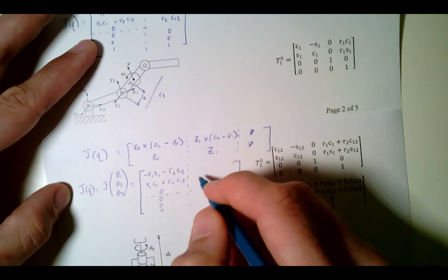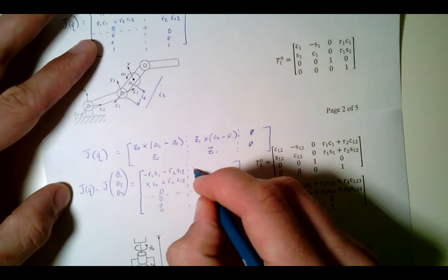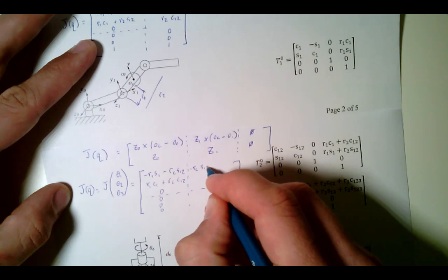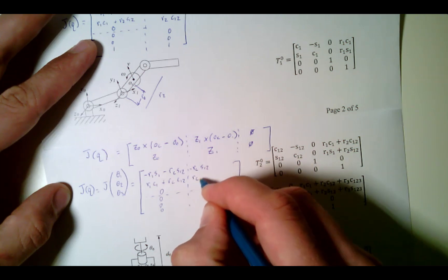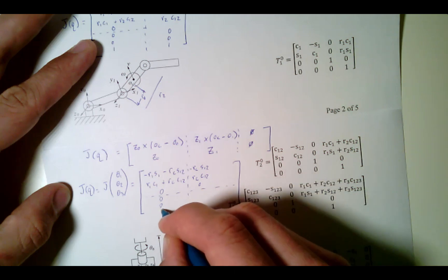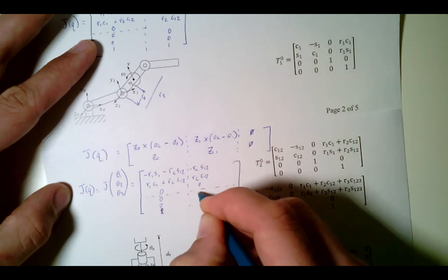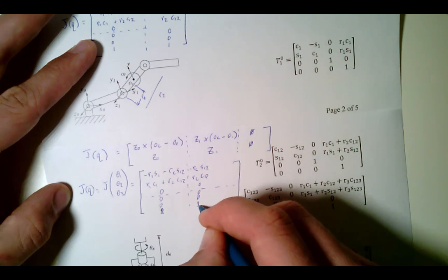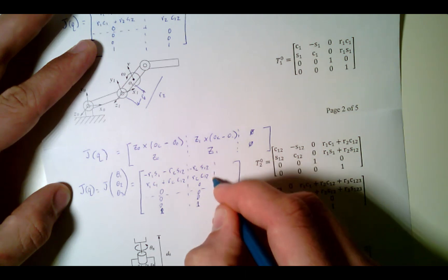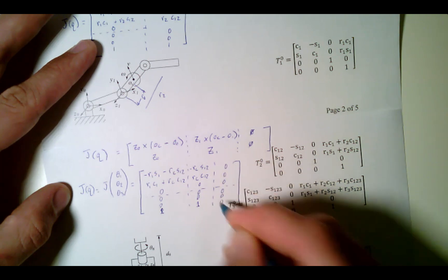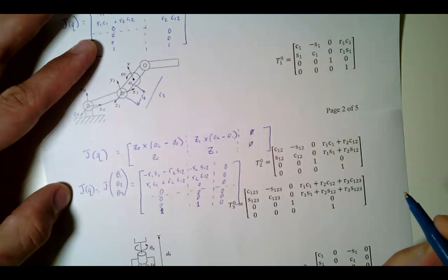My next column only has the RC component: minus RC*S12, RC*C12, 0, then [0, 0, 1] — and I'm rotating on the first axis. The final column is all zeros [0, 0, 0, 0, 0, 0]. We did not need the third joint, because it isn't affecting the center point of the second link.